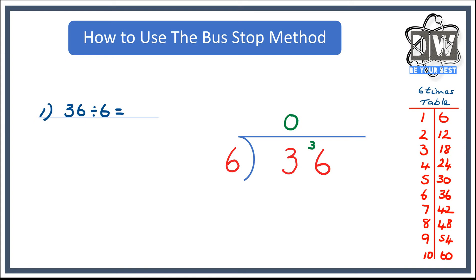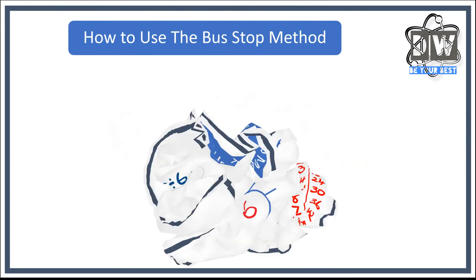So therefore what we do is we take that across and we make the new question: how many sixes go into 36? And if we look down our times table, we can see that six times six is 36. So we just put six in there. We have no remainders left, so therefore we can finish the question. And it really is as simple as that. If we write our six times table, we'll very quickly get there.